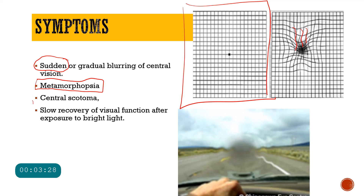The third symptom a patient complains of is a central scotoma — a black spot in the field of vision. Since it is present in the central field of vision because of the involvement of the macula, it is called a central scotoma. Apart from that, the patient might also complain of slow recovery of visual function after exposure to bright light. This happens because most of the cones, associated with photopic vision, are located in the macula, and when the macula is involved there is a problem with visual recovery after bright light exposure.